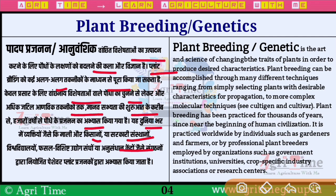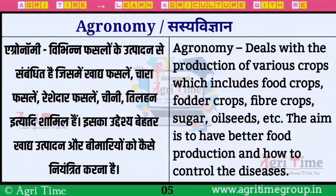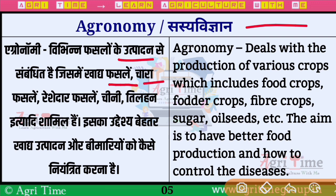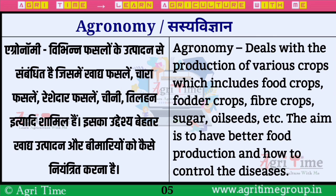This is the first plant breeding, which is the agricultural branch. अगर बात करें अगले branch की, यानि Agronomy — जिसमें field crops का उत्पादन और मिट्टी को किस प्रकार नियंत्रित किया जाए, यह Agronomy में होता है।